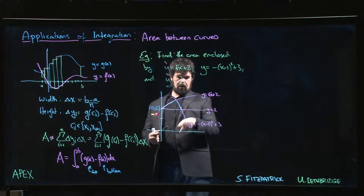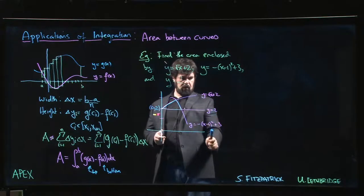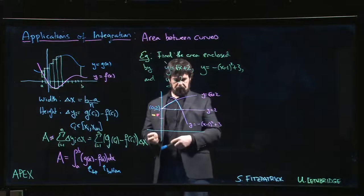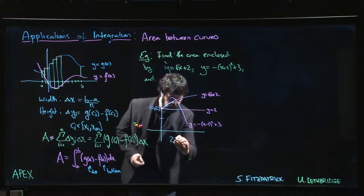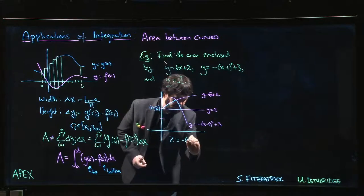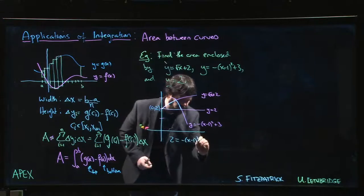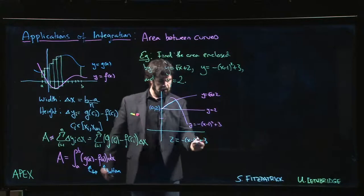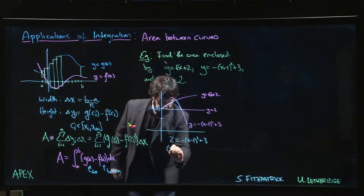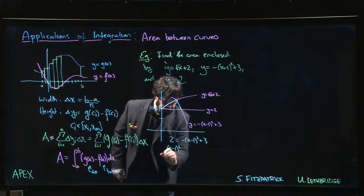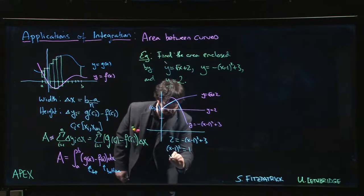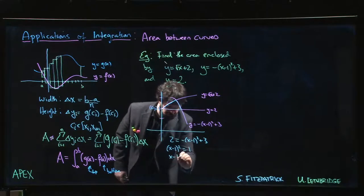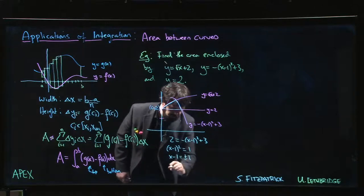This particular point of intersection happens when these two curves cross. So if I set 2 equal to -(x-1)² + 3, let's move the square over to that side, subtract 2 from both sides, we have 1. So x - 1 is going to be plus or minus 1.